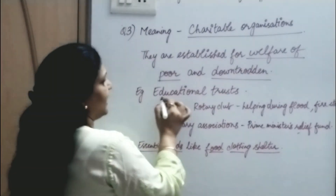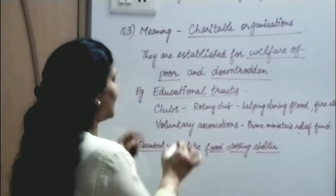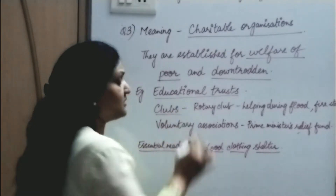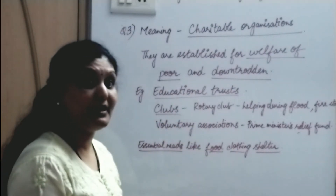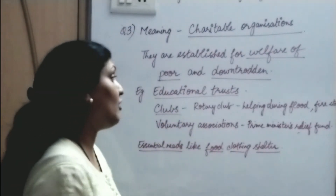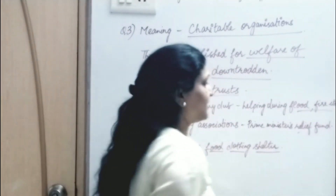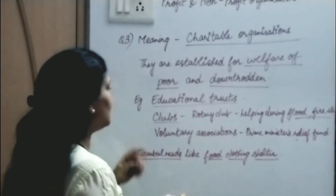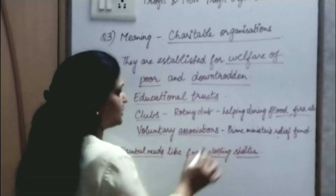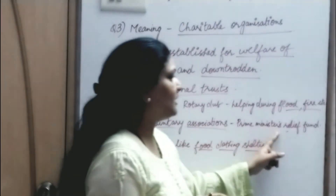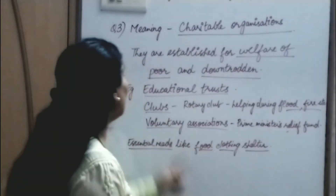Examples of Charitable Organizations: First is Educational Trust. Second is Clubs — for example, Rotary Club, which helps people at the time of flood, fire, etc. And the third is Voluntary Associations, like the Prime Minister's Relief Fund.